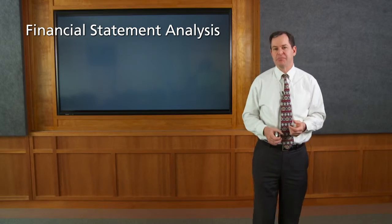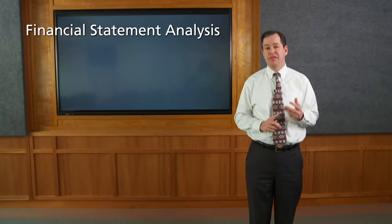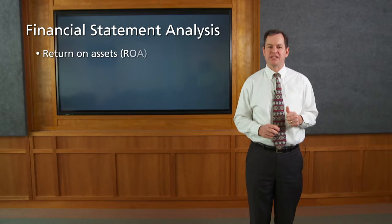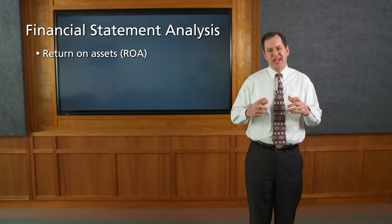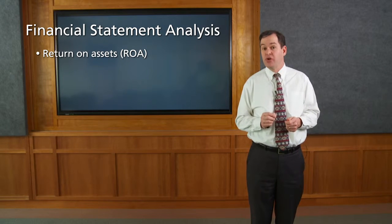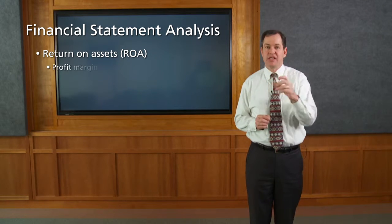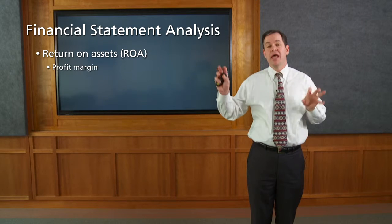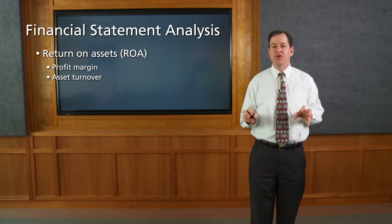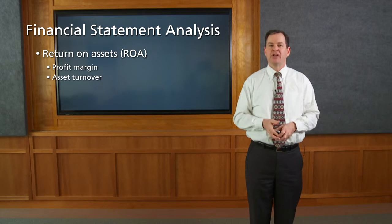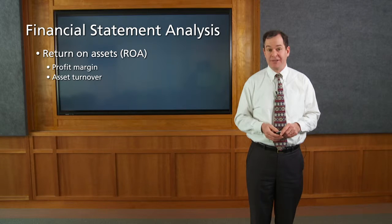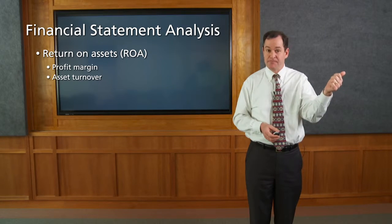There are four key points we want to tackle today. First, we want to talk about the return on assets — this ratio gives us a sense for how the firm is growing. We're going to decompose return on assets into two factors: a profit margin factor and an asset turnover factor. By decomposing return on assets into those two factors, we gain good insight into how well the firm is implementing its strategy.